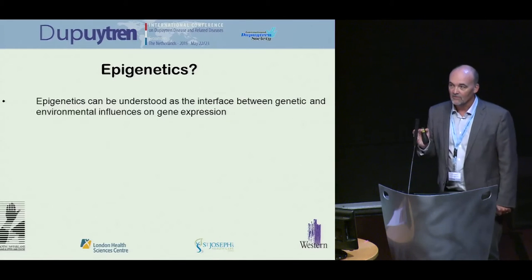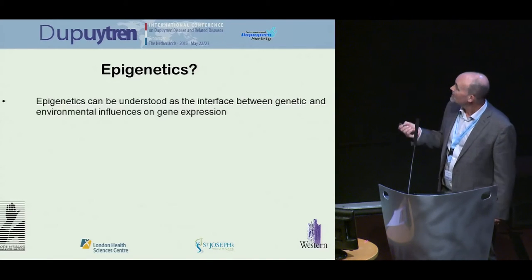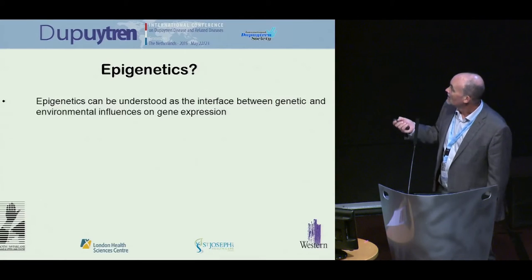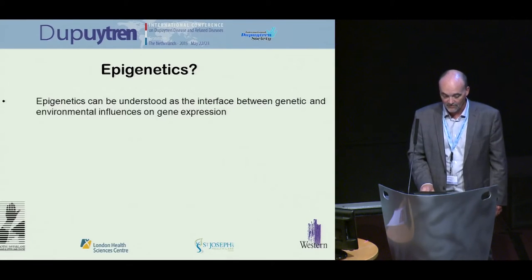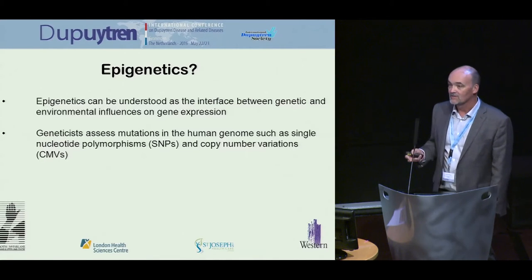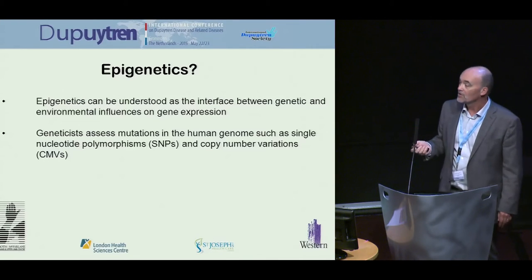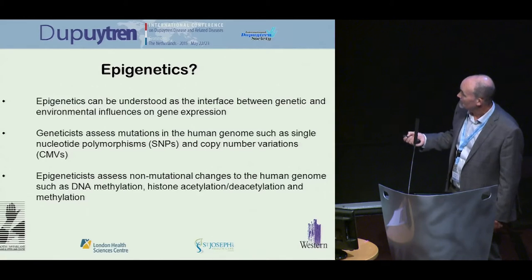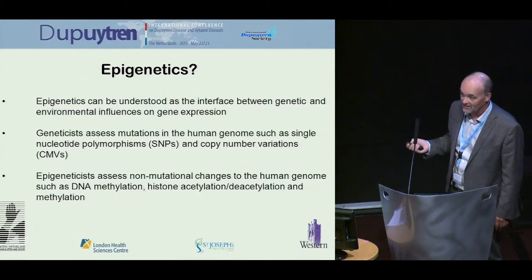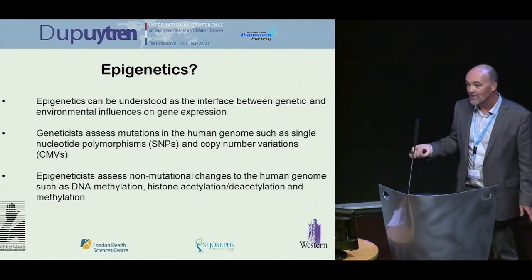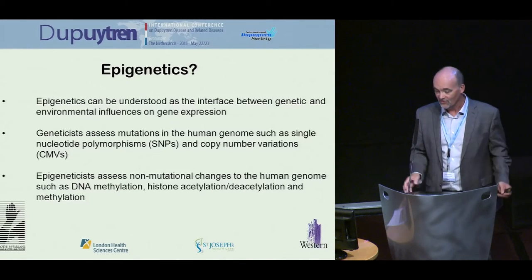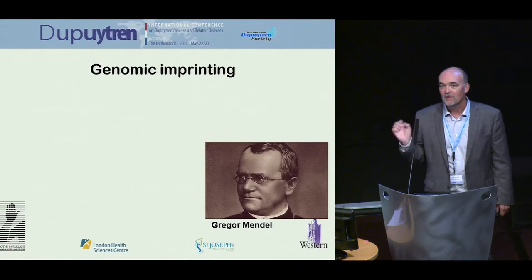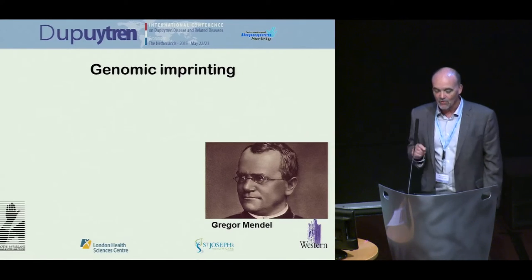Epigenetics is something we didn't hear about at this conference this year, but I hope we'll hear a lot more about next year. It can be understood as the interface between the genetics we've already heard about and the environmental influences — which we know very little about — on gene expression and protein translation in cells. Epigeneticists look at non-mutational changes to the genome: DNA methylation, histone acetylation, histone deacetylation, histone methylation on glycines and arginines. All of these regulate gene expression and are probably changed in Dupuytren's disease.